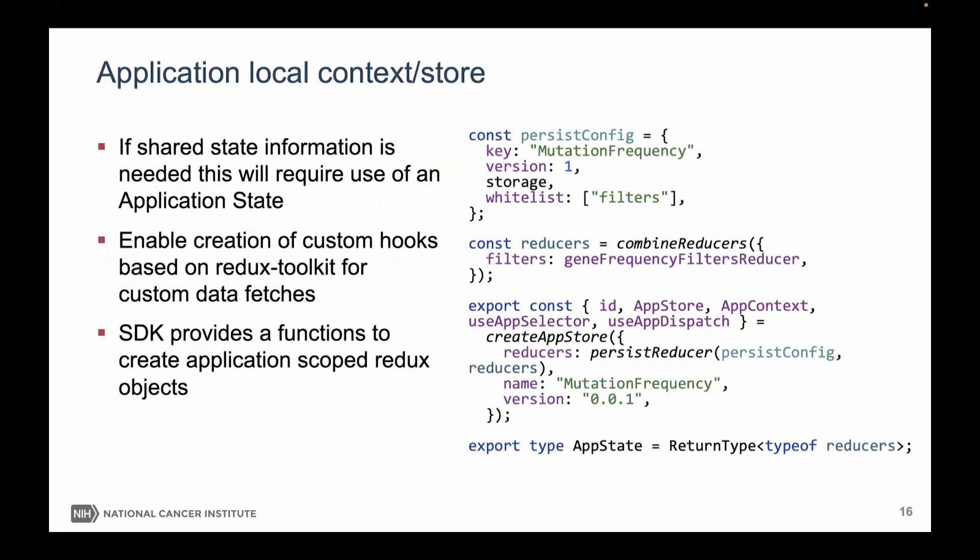We have calls that let you actually build the store and register the app with the system. These calls give your application its own store if needed, to keep the local state of the app, in addition to talking to the global state of the overall portal. These are high-level functions that wrap a lot of setup for you. There are plenty of examples in the code base — if you've cloned it, you can look at existing apps to see how these are done.